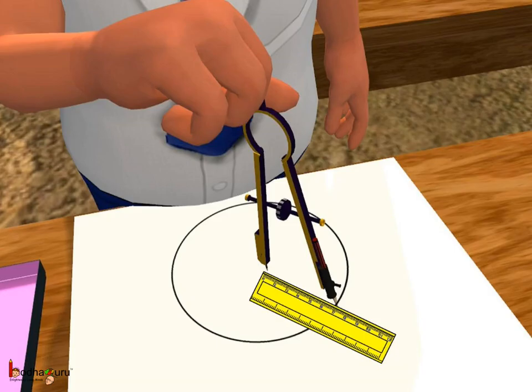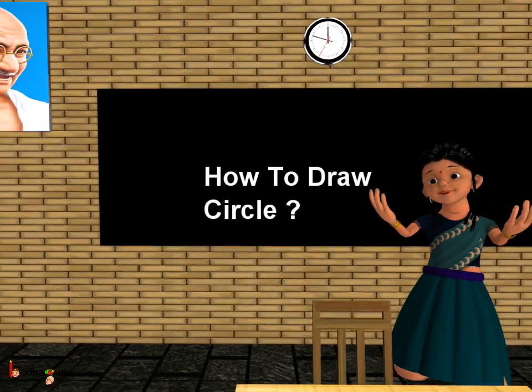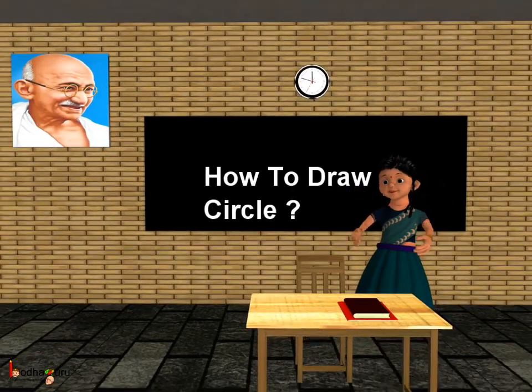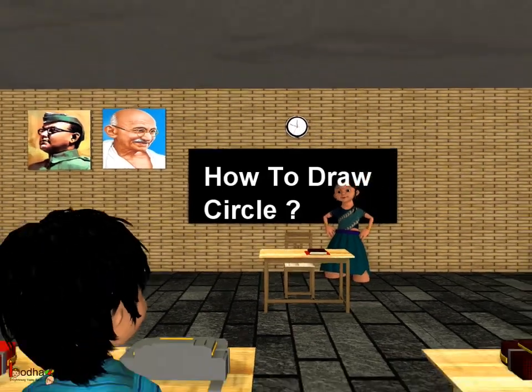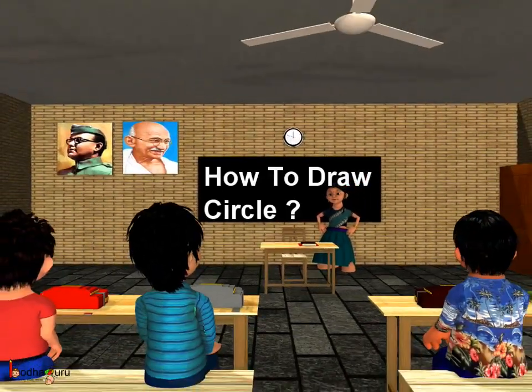You can also use a ruler to figure out the radius of the drawn circle — you will find it is equal to 6 cm. So now you know how to draw a circle. That was all for today. Bye bye children!